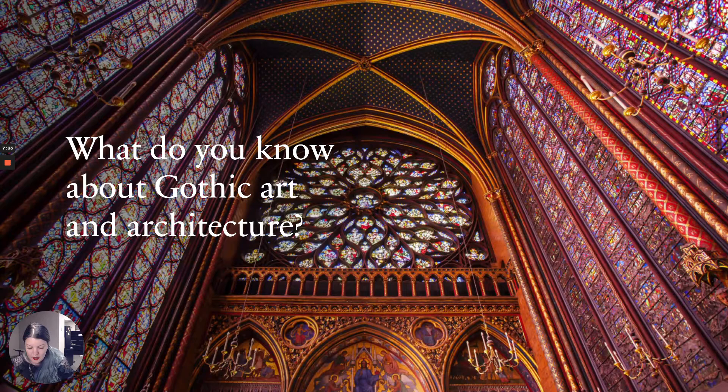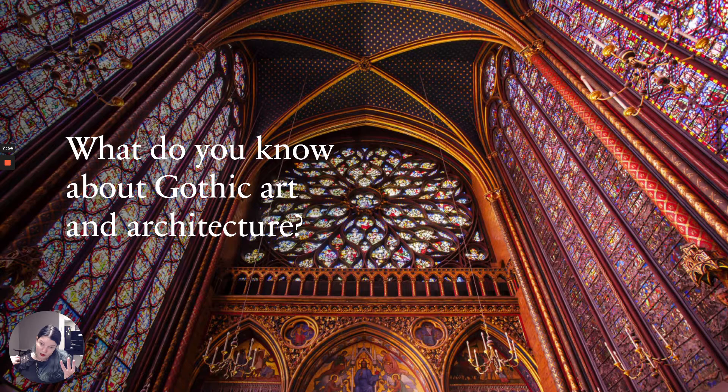The papacy is at the height of its power. The Crusades are still happening. We have independent nations beginning to take shape — France starts to look like France. For Gothic art and architecture, there are three major areas in Europe: France, England, and the Holy Roman Empire, which is what is now Germany and parts of Italy and Austria.